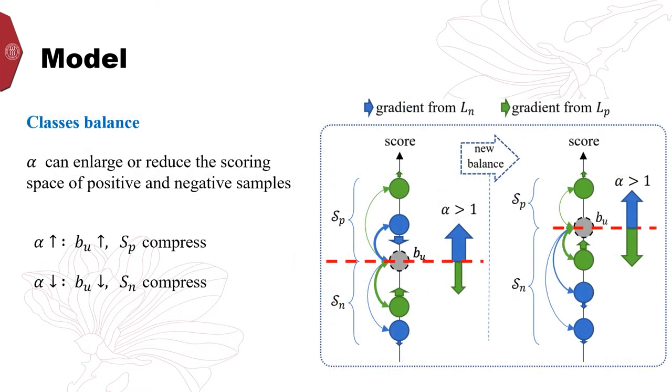The other advantage of our model can balance the gradient information of negative and positive samples in training stage. As our loss optimizes Ln and Lp individually on the whole expression, we can assign a proper alpha and develop different sampling strategies to balance classes of positive and negative samples. That's, adjusting alpha to enlarge or reduce the scoring space of positive and negative samples.